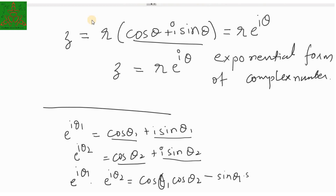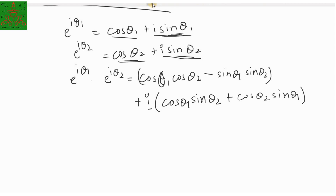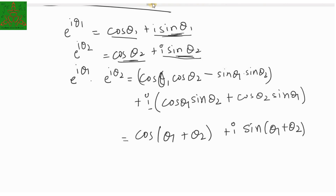That will give you cos θ₁ into cos θ₂ minus sin θ₁ into sin θ₂, plus i times cos θ₁ sine θ₂ plus sin θ₁ cos θ₂ — taking i common. That gives you cos(θ₁ + θ₂) plus i sine(θ₁ + θ₂), using the cos(α + β) formula, and we can write this as e raised to i(θ₁ + θ₂).